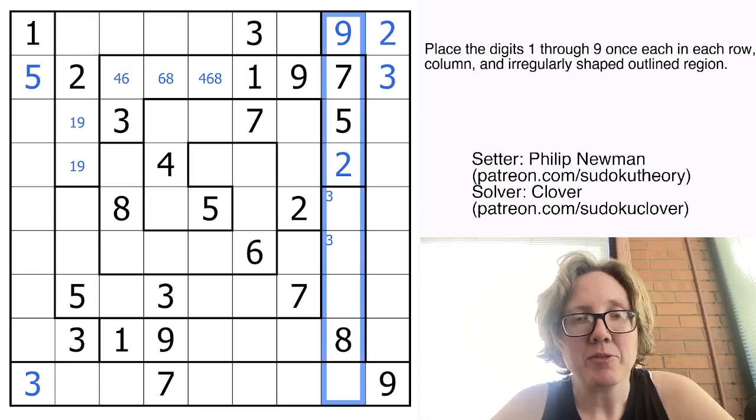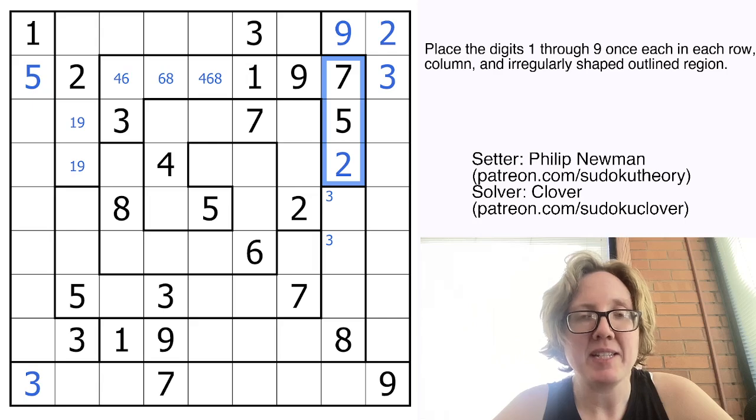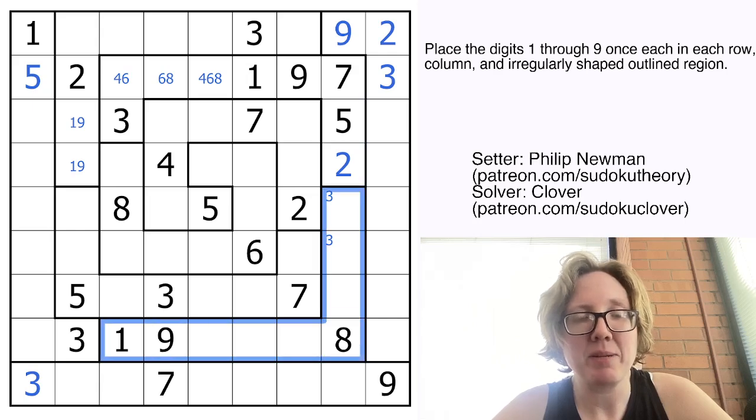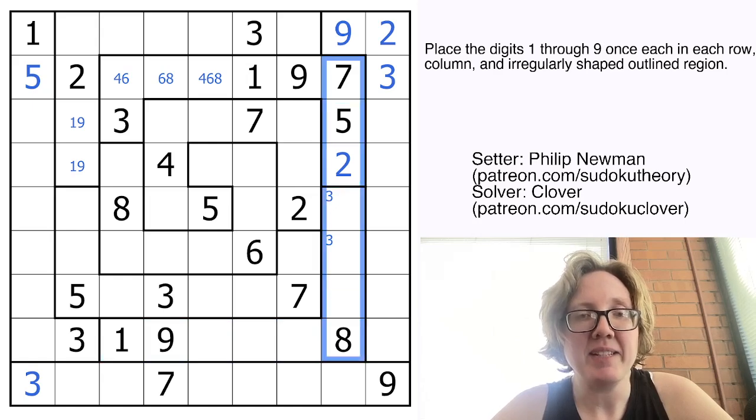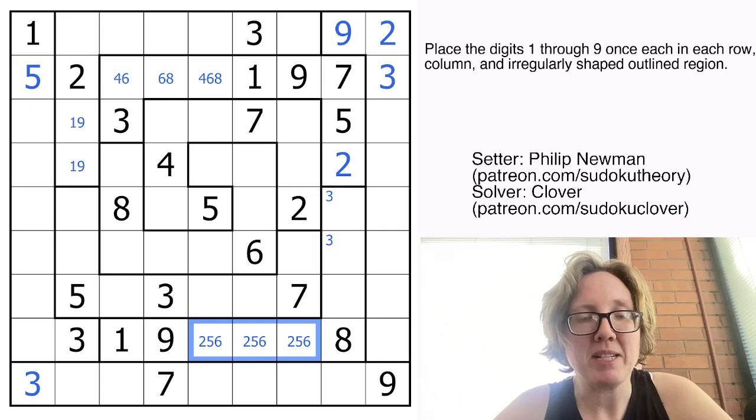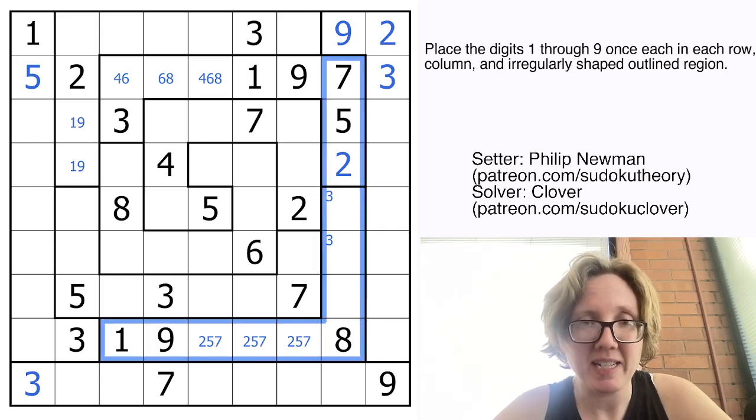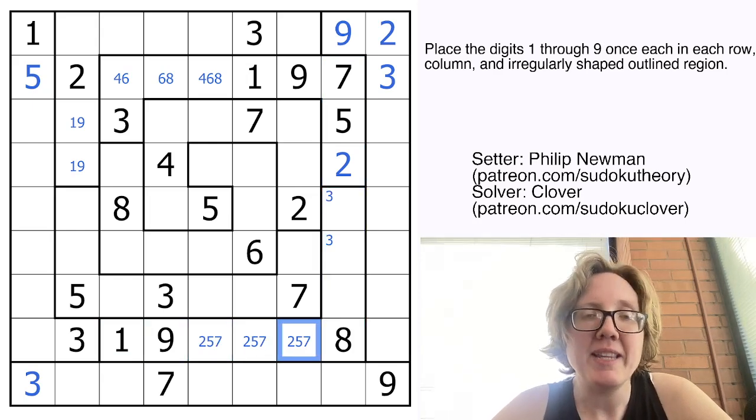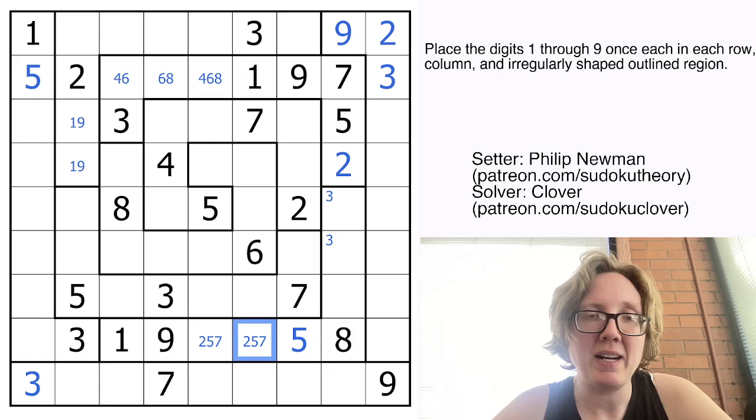This column is starting to look restricted to me. I'm noticing, okay, so I have a two, a five, and a seven. And I don't have any of those numbers in this L-shaped region yet. And they can't go in these cells. So these will have to be my two, five, and seven. Those are the only positions those three numbers can go in in this L-shaped region. And then this can't be a two or seven. So that's the five.